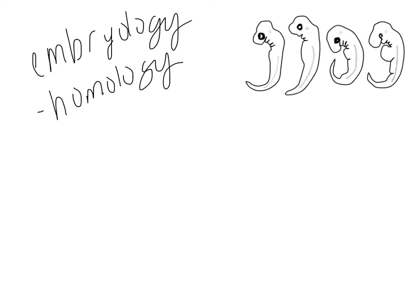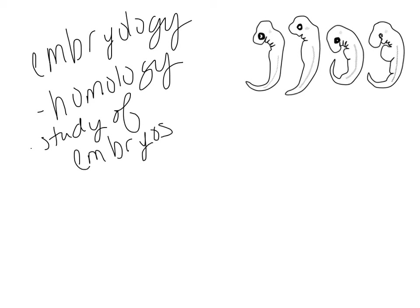Another example of homology is embryology — the study of embryos. One thing we can see when looking at embryos is that different species may appear very, very similar in their early stages. If you look at these on the right, all four are different vertebrates, but they look very similar in their early embryological stages, which again shows a link to a common ancestor.